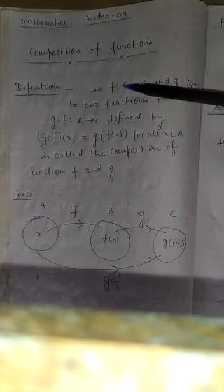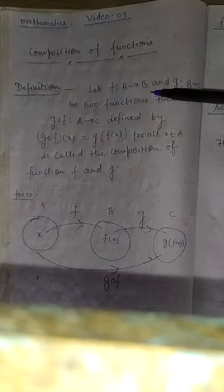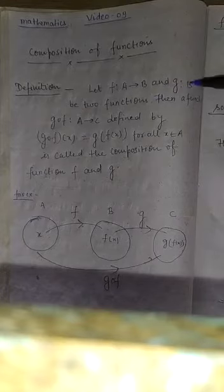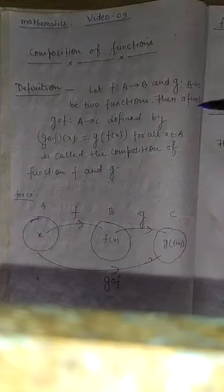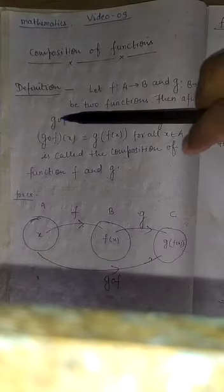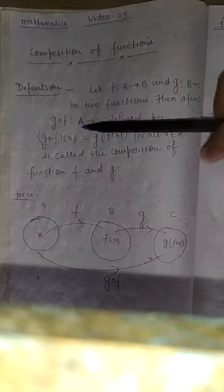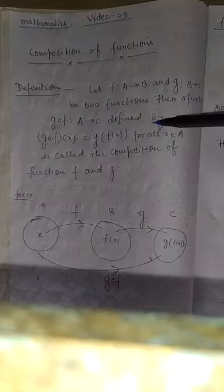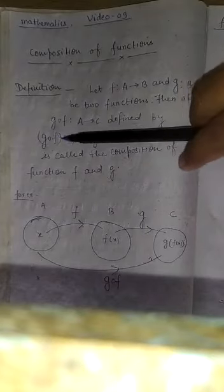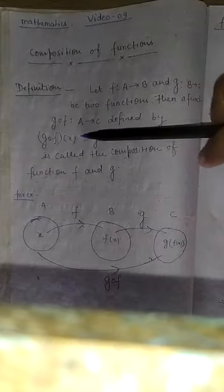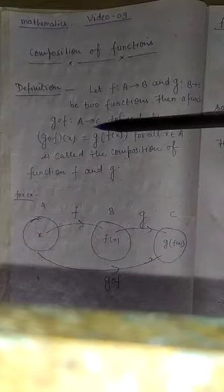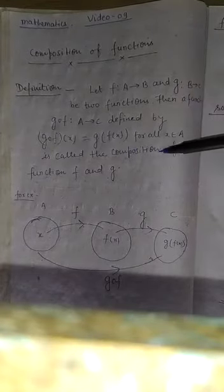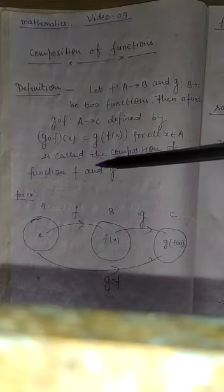Let function f: A to B and function g: B to C be two functions. Then a function g∘f: A to C defined by (g∘f)(x) = g(f(x)) is called the composition of functions.